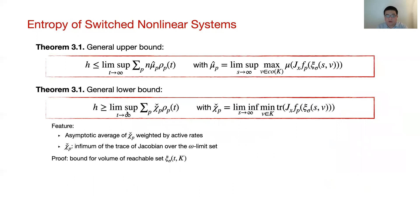We also construct a lower bound for the topological entropy of a general switched nonlinear system. Similar to the upper bound, it is in the form of an asymptotic average of a constant chi-check_p for each mode, weighted by the corresponding active rate. The constant chi-check_p is the infimum of the trace of the Jacobian matrix over the omega-limit set. The proof relies on the previously obtained lower bound for the volume of the reachable set and the lemma for separating system dynamics and switching coefficients. Please refer to the paper for more details.